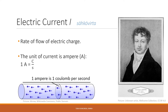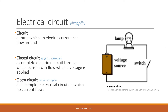The ampere is named after André-Marie Ampère, who founded the science of electromagnetism. An electrical circuit is a path for transmitting electric current. In order for a lamp to light up, the circuit must be closed. In other words, there must be a connection between the poles of a voltage source, for example a battery, and the light bulb.